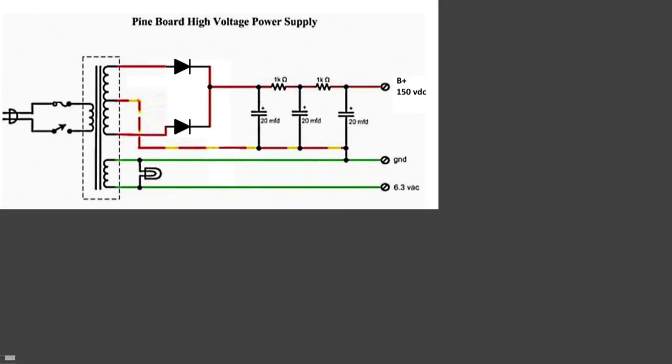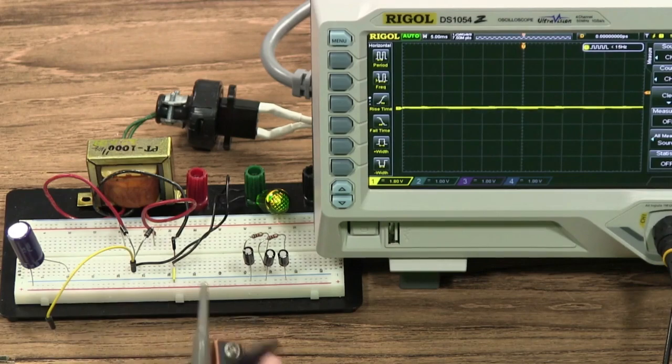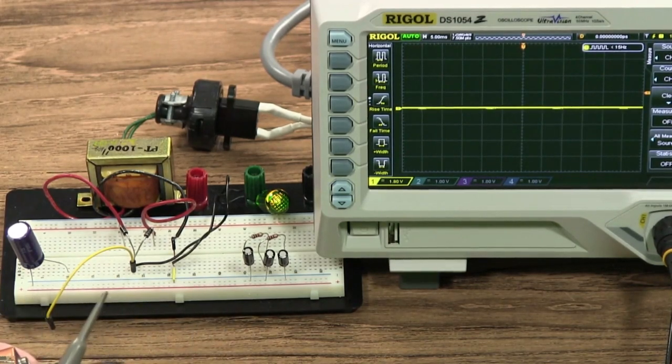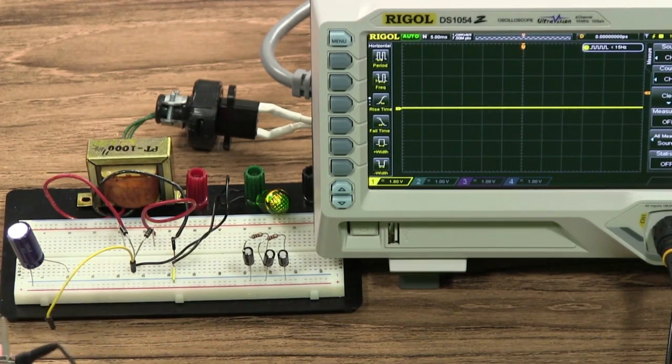First thing we're going to do, though, is we're going to take a look at just a 9-volt battery and see what that looks like on the scope.